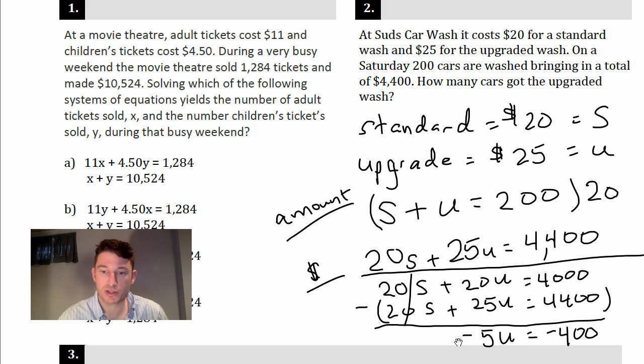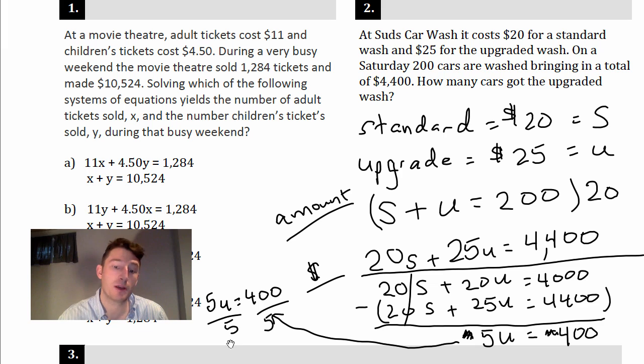I'm going to continue this over here because I kind of ran out of space. So I'm going to cancel out the negatives because both sides have negatives, and it's just 5U equals 400. Divide by 5, divide by 5, and you got calculators at home or you could do it in your head, and you should get 80. And that's it. So now that means that 80 cars got the upgraded wash.